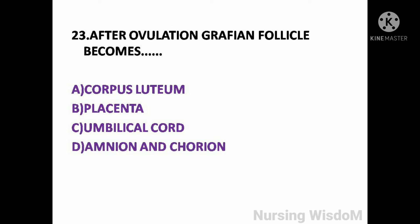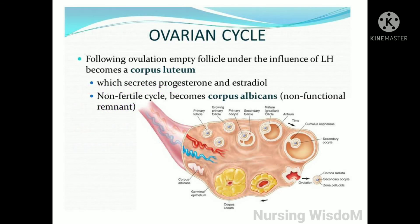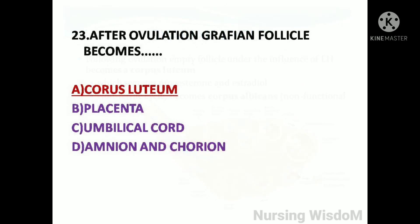Next question: After ovulation, the Graafian follicle becomes — option A: corpus luteum; option B: placenta; option C: umbilical cord; option D: amnion and chorion. Following ovulation, the empty follicle under the influence of luteinizing hormone becomes a corpus luteum, which secretes progesterone and estradiol. In a non-fertile cycle it becomes corpus albicans. So here the answer is option A, corpus luteum.